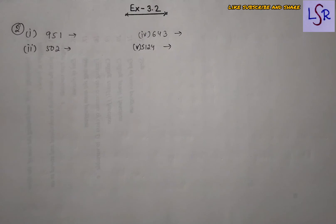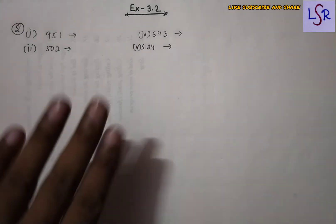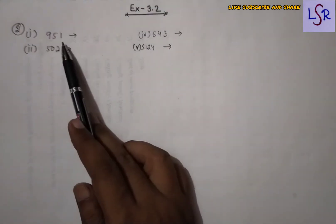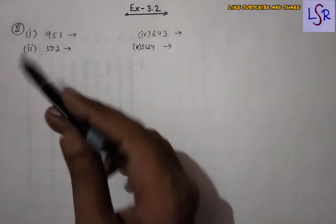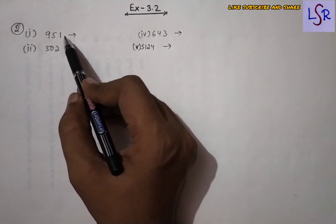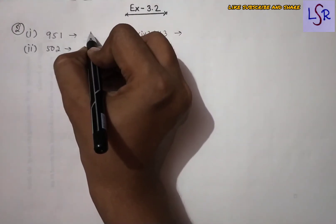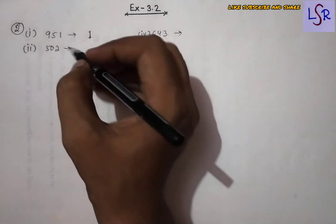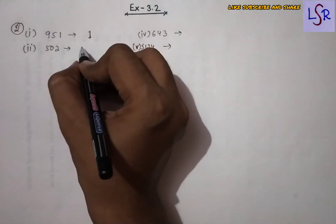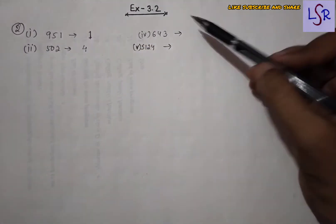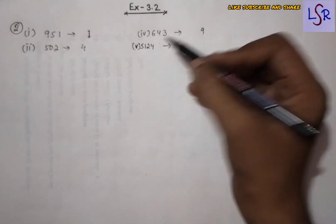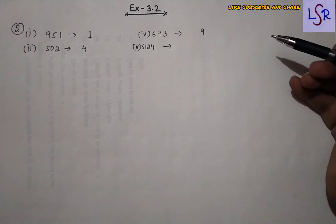Now let's see Exercise 3.2, Question 2: what will be the unit digit of the squares of the given numbers? To find the unit digit, we only need to look at the unit digit of the original number. If the unit digit is 1, the square's unit digit is 1. If it's 2, the square's unit digit is 4. If it's 3, the square's unit digit is 9. If it's 4, 4²=16, so the unit digit is 6.